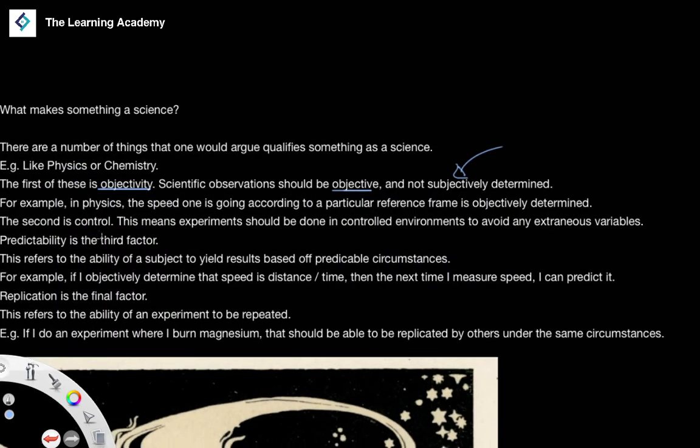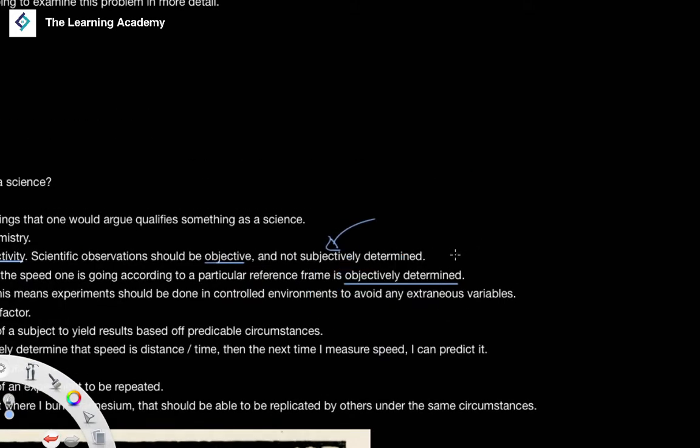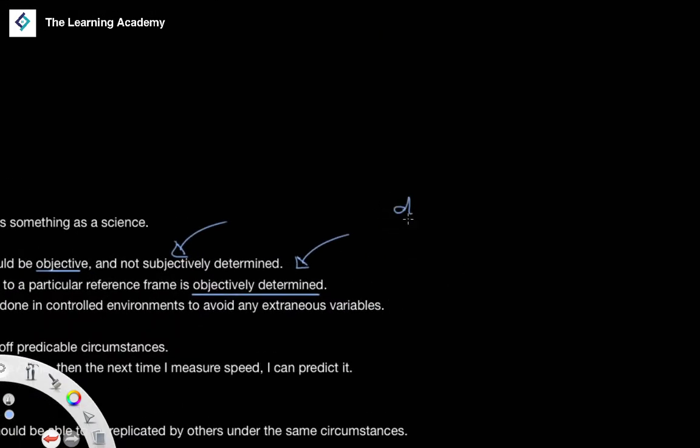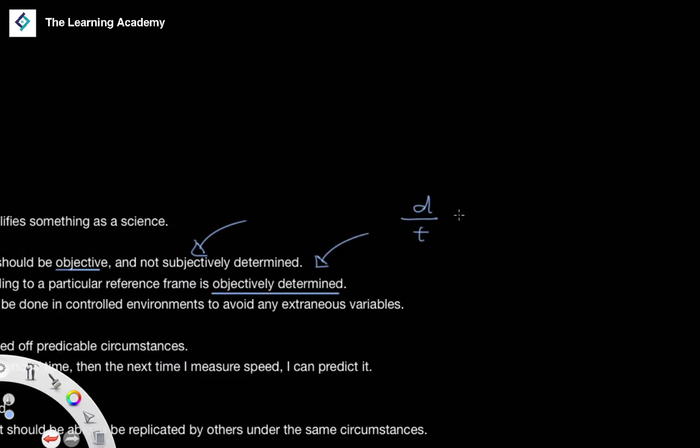So in physics, for example, if one is going to look at the determination of one's velocity with regard to a particular reference frame, this is something that is objectively determined. It doesn't matter who you are. If I wanted to calculate your speed, all I would have to do is measure the distance that you travelled divided by the time it took you to travel that distance. And that will give me your speed in physics.